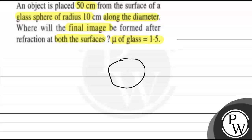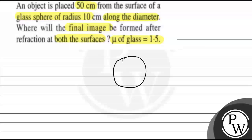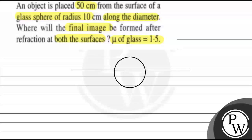In this question, we have given a glass sphere, and we have passed the diameter as its axis. We have placed an object. Let's say the radius is 10 cm, and the object is placed 50 cm from the surface.